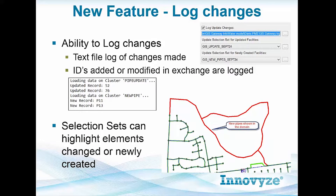Another new key feature is the ability to log changes. There's a text file where it logs the IDs of the elements that are exchanged — as we run this pipe update, it's going to update two different pipes, and it's going to create two new pipes when this cluster is run. You can also set aside selection sets that will highlight elements that were updated as well as elements that are newly created. That allows you to go back after the exchange is completed, put those selection set elements in the domain, and visually see exactly what was updated by that last exchange.